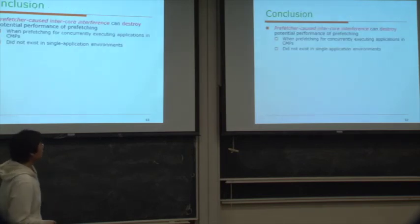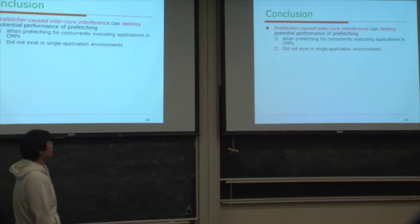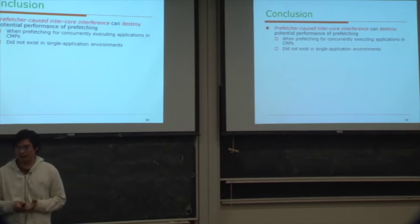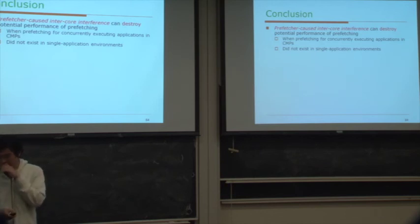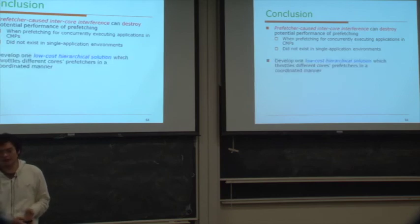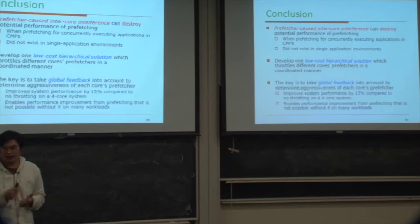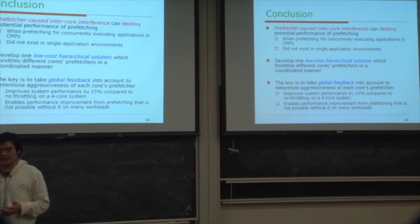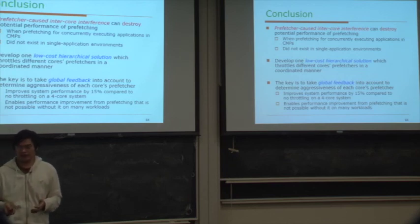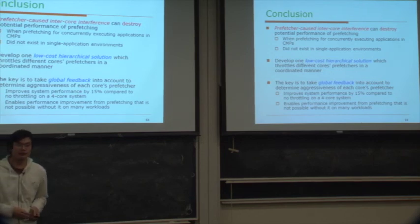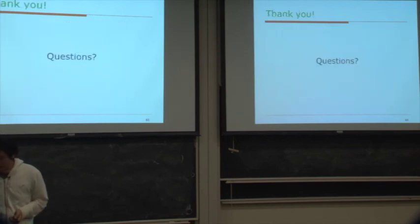In conclusion, prefetcher-caused inter-core interference can destroy the potential performance benefits of prefetching when applications execute concurrently in a CMP—a problem that does not exist in single-application environments. HPAC is a low-cost hierarchical solution that throttles different core prefetchers in a coordinated manner, taking global feedback into account to determine each core's prefetch aggressiveness. This improves system performance by 15% over no throttling on a four-core system and enables performance improvements from prefetching that would otherwise be impossible on many workloads.